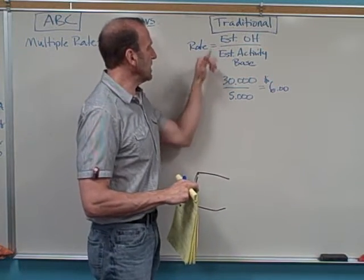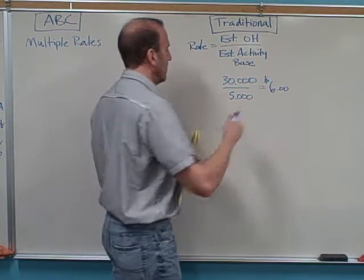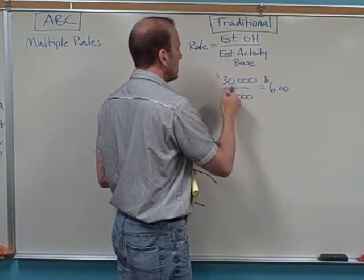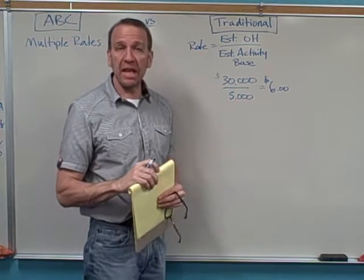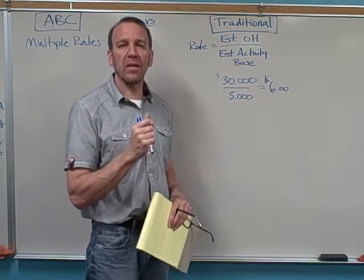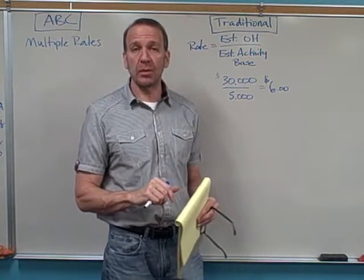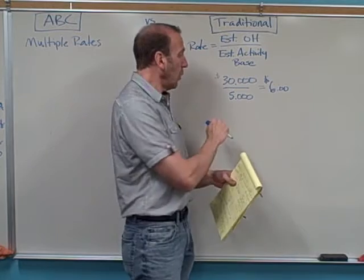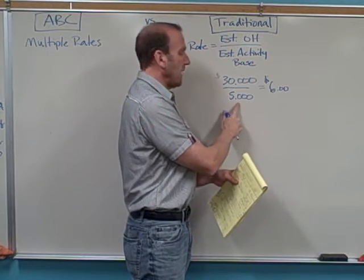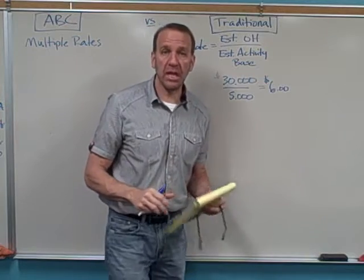So for example, let's say that our estimated overhead is $30,000 for this time period. And let's say that our activity base is going to be labor hours. How many hours our laborers are physically working on the product? Let's say we estimate there's going to be 5,000 labor hours in this time period. Well, we'll take the 30,000 divided by the 5,000 labor hours, and we'll get a rate of $6 per labor hour.